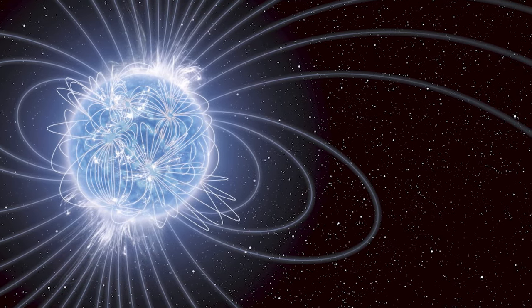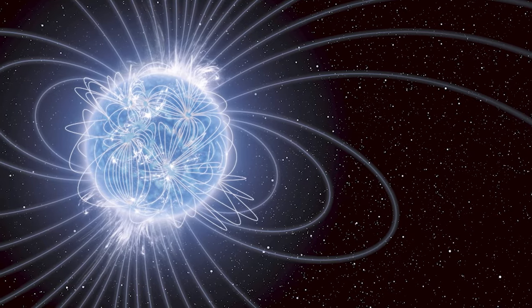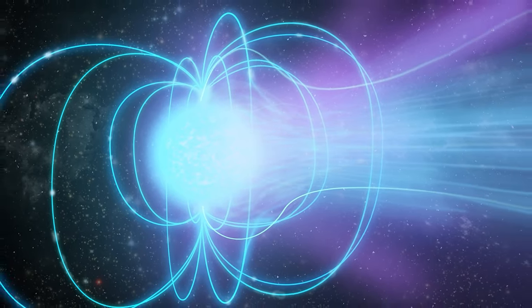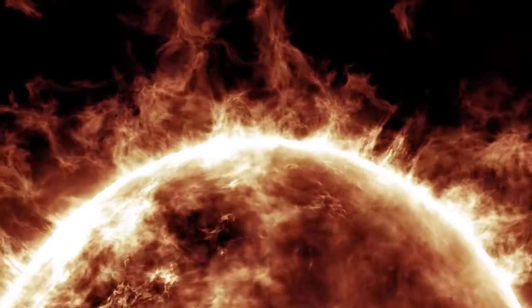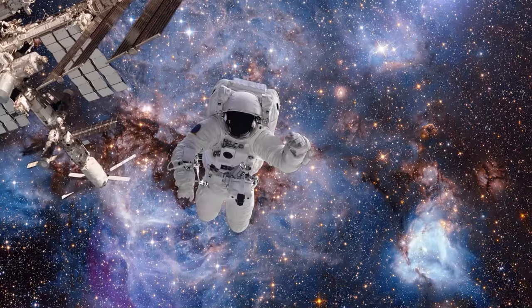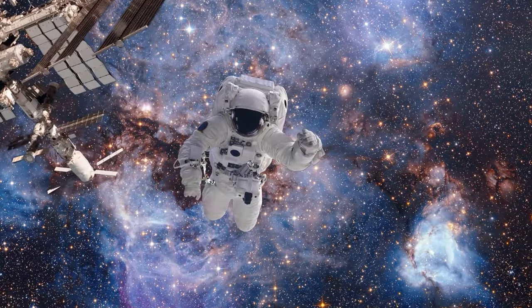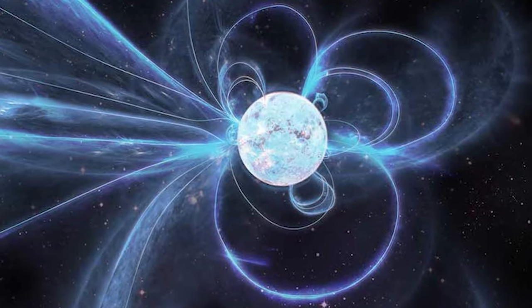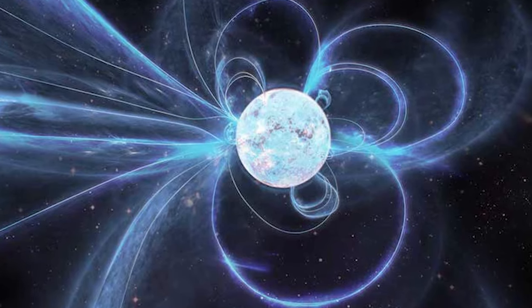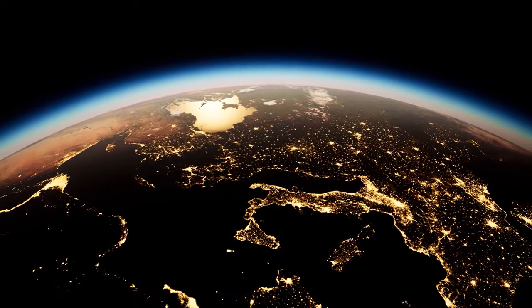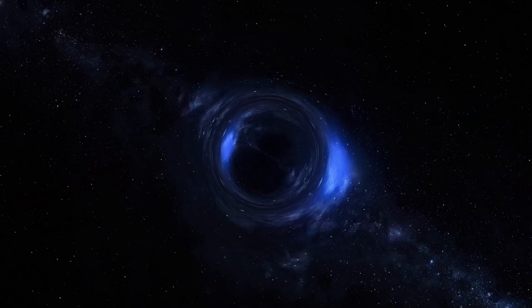Magnetars are also dynamic and occasionally unpredictable. They can produce what's known as starquakes due to the tension between their immense gravity and their magnetic fields. These starquakes can release gamma-ray flares, which are millions of times more energetic than the most powerful solar flares from our sun. Thankfully, no magnetar is close enough to us to pose a threat. However, a gamma-ray burst directed at Earth from even thousands of light years away could cause significant harm to our atmosphere and possibly even lead to mass extinctions.